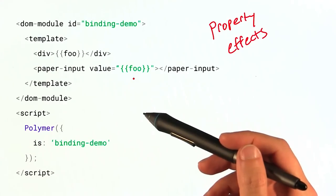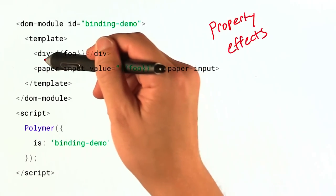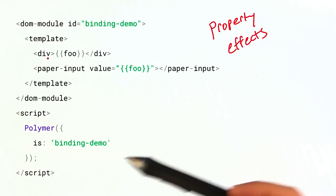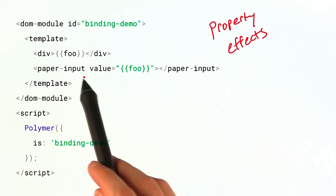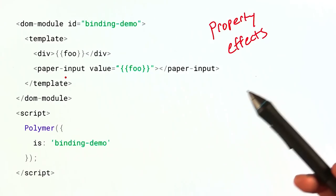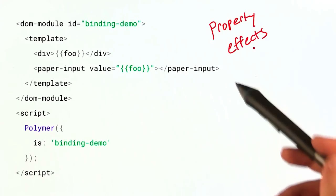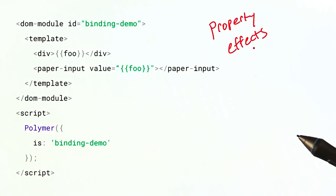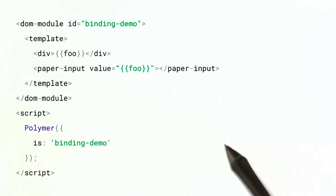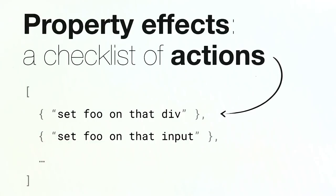So in this example, Polymer is going to create a property effect for this div right here and another property effect for this paper input element. So we'll have two property effects. And all of these property effect objects get stored in an array. Now, I like to think of that array of property effects as kind of like a checklist of actions that need to run any time that property updates.